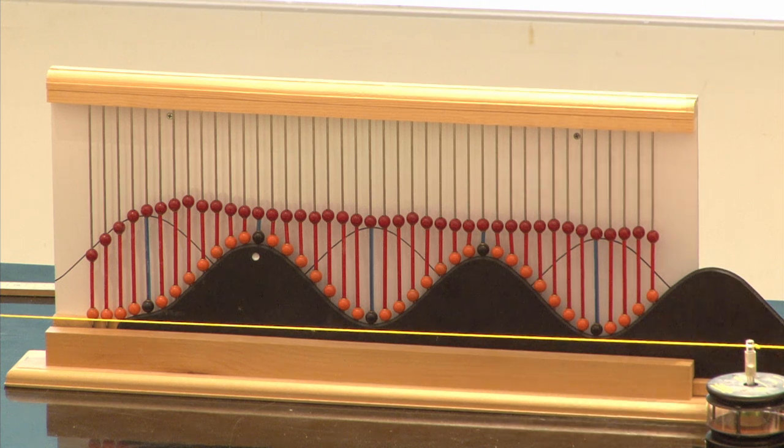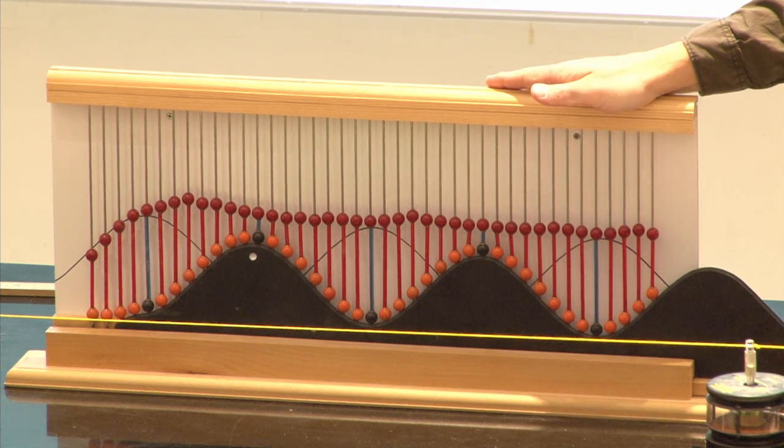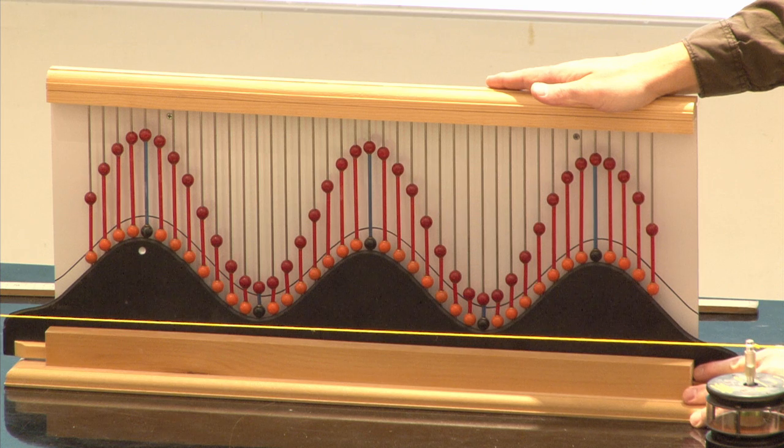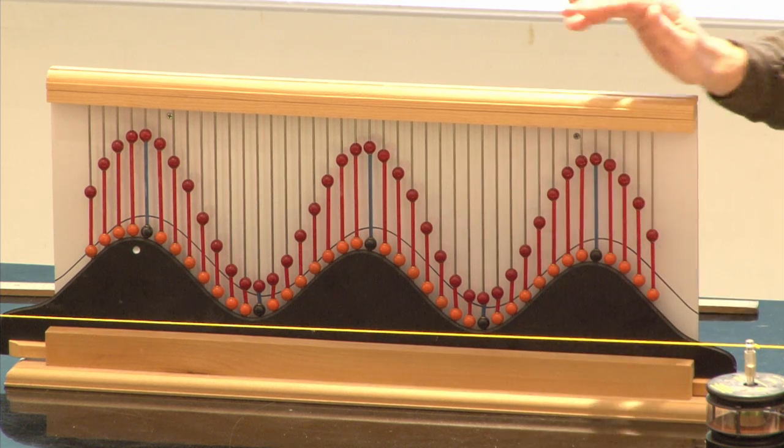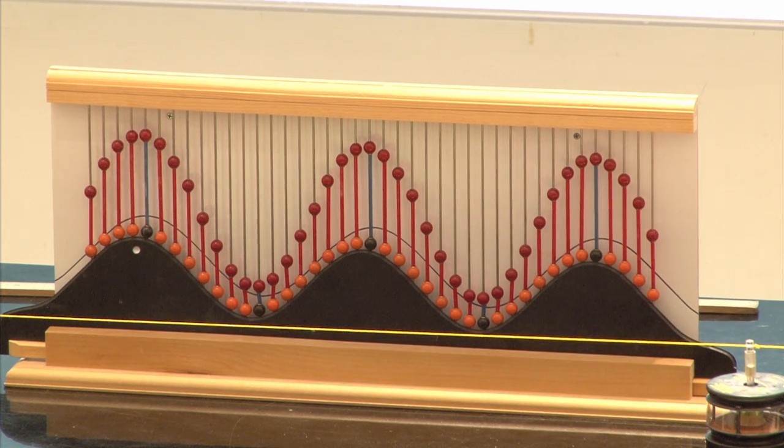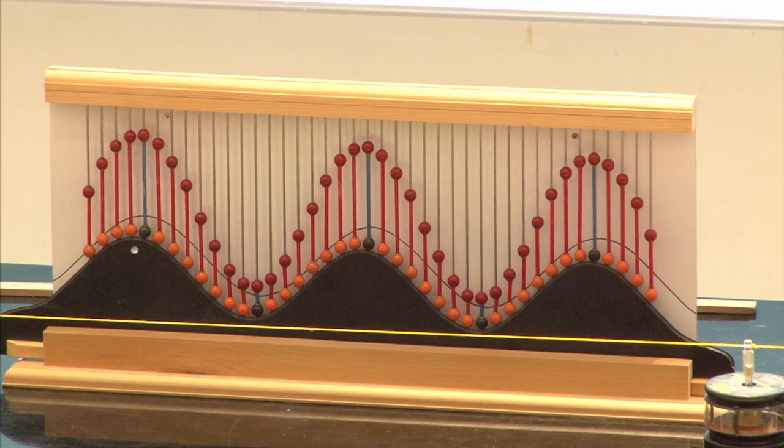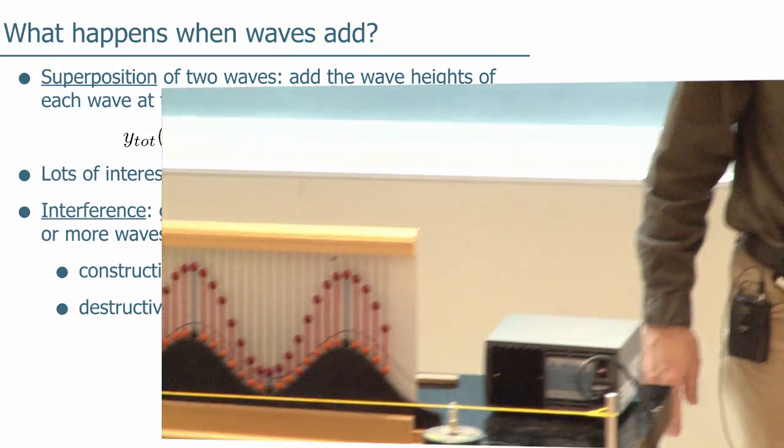That would correspond to our phase shift of pi. Now if I line them up you get a bigger wave, the red one gets bigger, it's just the sum of the two. So that's the difference between destructive and constructive interference.